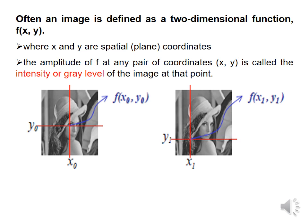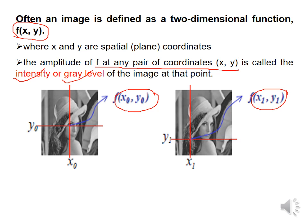An image can be defined as a two-dimensional function f(x, y), where x and y are the spatial coordinates, and the amplitude of f at any pair of coordinates (x, y) is known as the intensity or gray level of the image at that particular point. Here you can see two images of the same girl — in the first case the coordinate is (x0, y0), while in the second case it is (x1, y1). So f(x0, y0) gives us the intensity level of that pixel, and f(x1, y1) gives us the intensity level at coordinate (x1, y1).